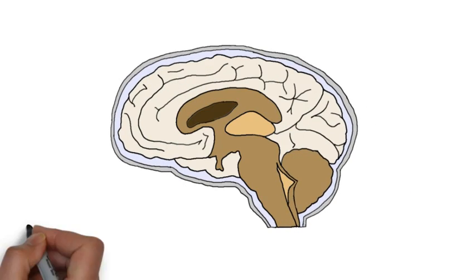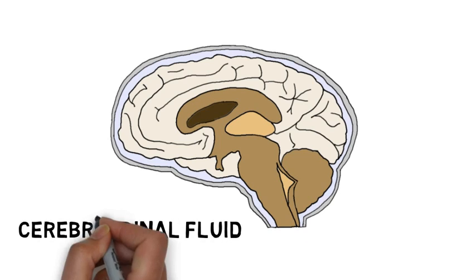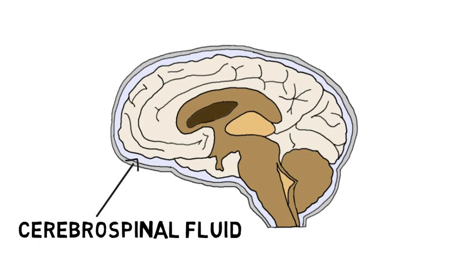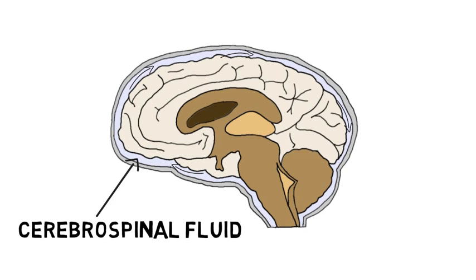Cerebrospinal fluid, or CSF as it is commonly called, is a clear, colorless liquid that performs a number of important functions in the brain. Among other things, CSF surrounds the brain, forming a protective layer and suspending the brain in fluid, which reduces the strain forces like gravity would have on the brain. Also, it constantly flows through and around the brain, removing toxins and regulating the extracellular environment of neurons.